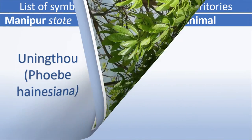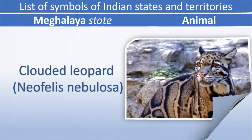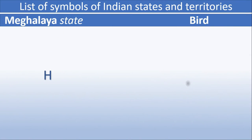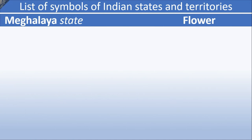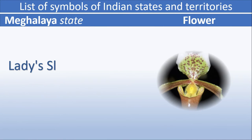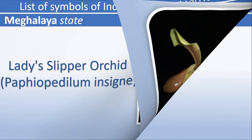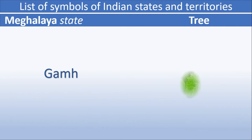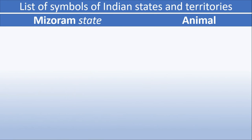Meghalaya animal: Clouded Leopard. Meghalaya bird: Hill Myna. Meghalaya flower: Lady Slipper Orchid. Meghalaya tree: Gamhar.